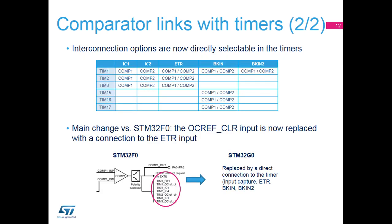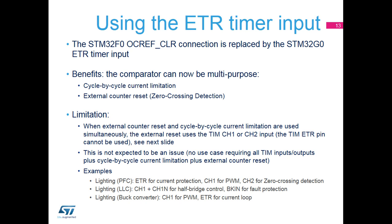The upper table is the connection matrix between the comparator and the timer units. The OC-REF CLR timer input used in STM32F0 is replaced with the ETR input in the STM32G0. The connection between the comparators and the timer is generally used for two purposes: cycle-by-cycle current limitation based on the blanking mechanism, and external counter-reset when the voltage drops below a threshold for zero crossing detection.